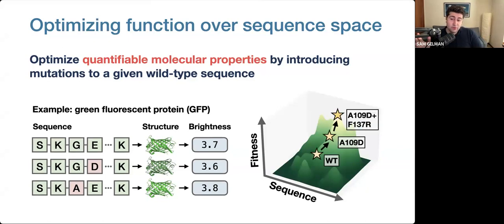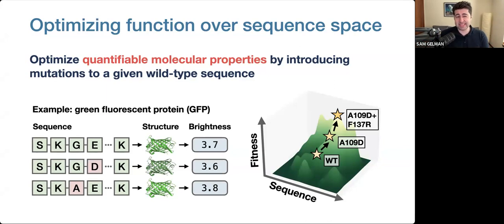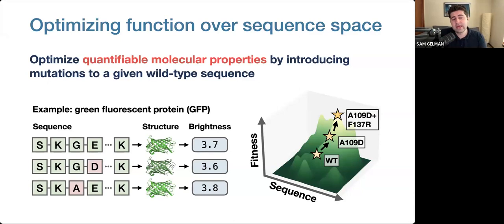The challenge with protein design is that there are many different ways to modify a protein sequence, and it's hard to know how a particular modification is going to affect function. We can test protein variants in the lab to see how they function, but the space of potential mutations is so big that it's not feasible to test all of them. This is where machine learning can be helpful. If we can train a model to accurately predict the functional effects of mutations, the model can help guide our search through the sequence space and find variants with high function more effectively.